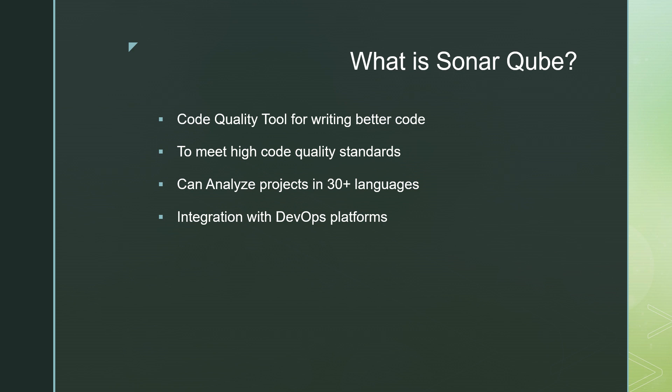SonarQube is itself a DevOps tool and it provides easy integration with other DevOps platforms like Git, GitHub, GitLab, Azure, and BitBucket. It is also available as a Jenkins plugin to integrate SonarQube with a Jenkins CI/CD pipeline.